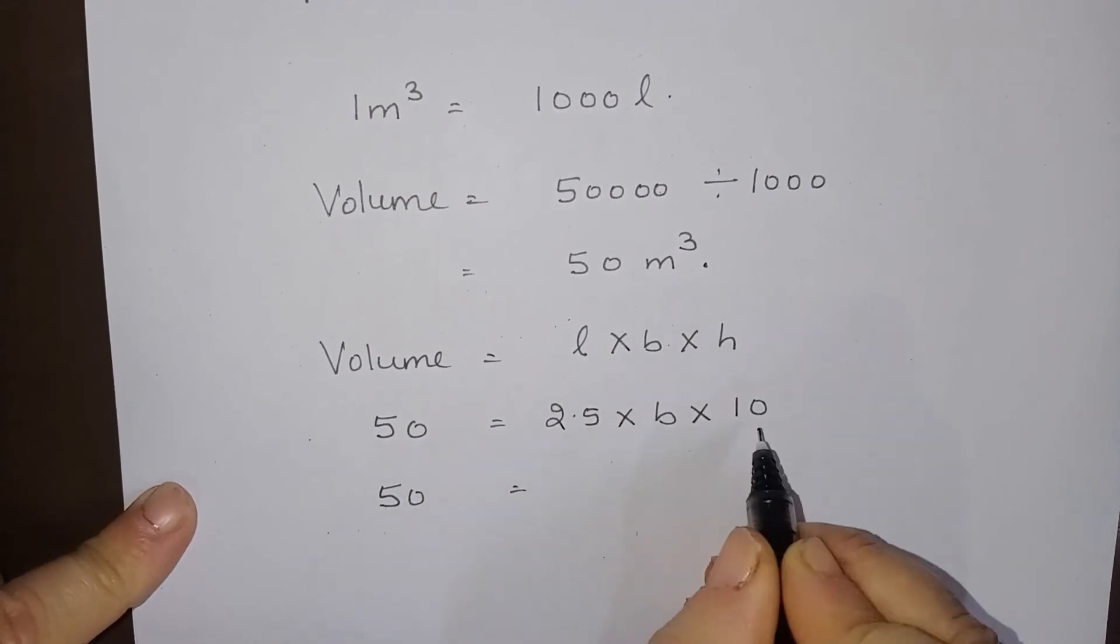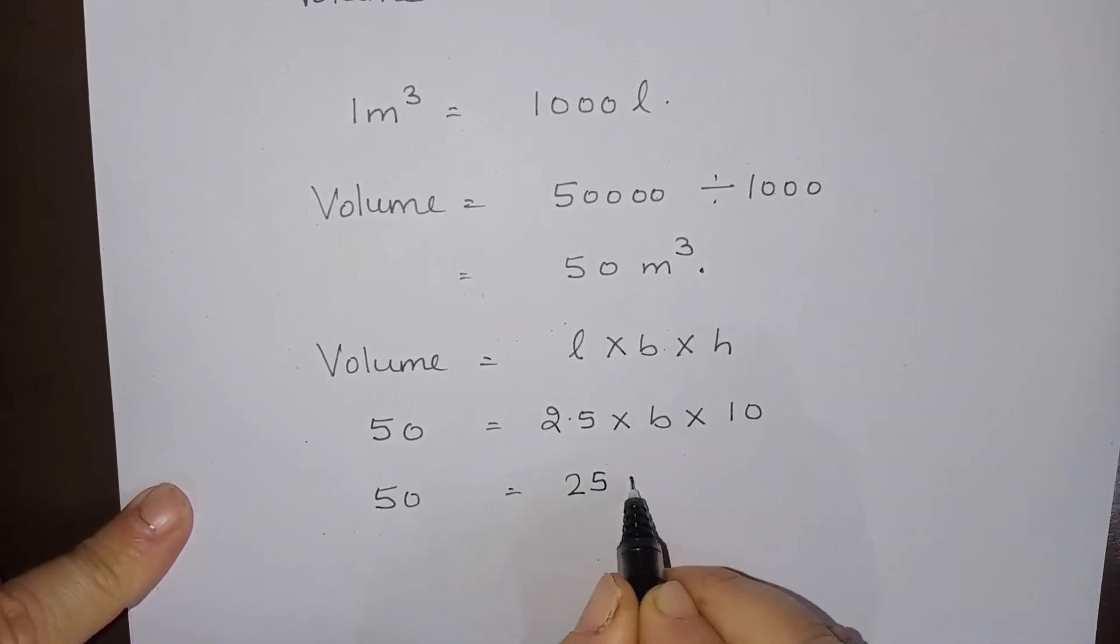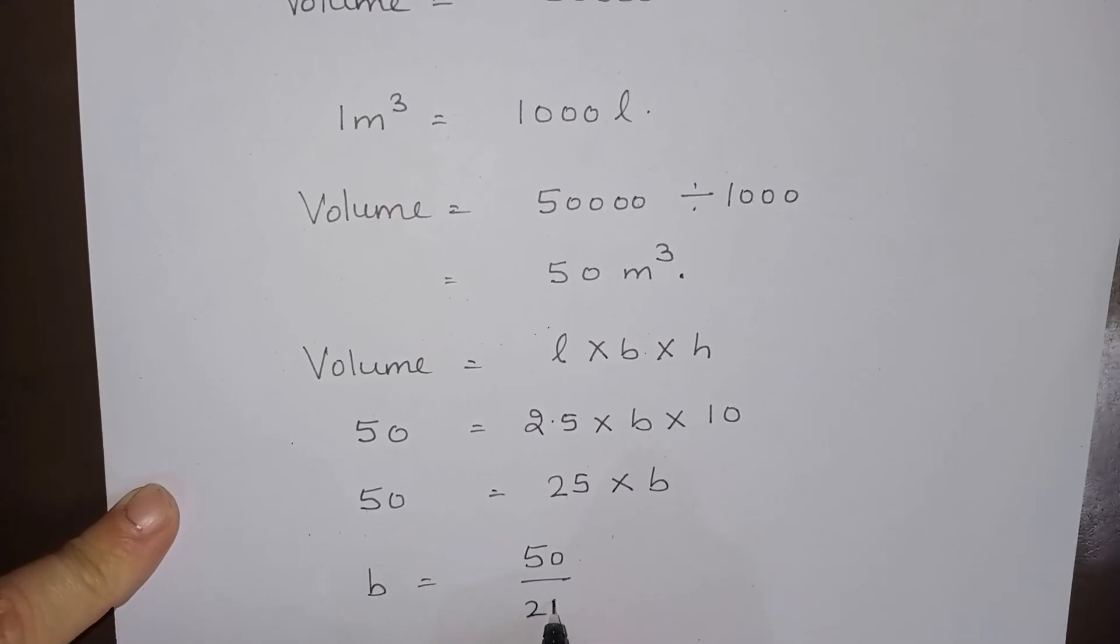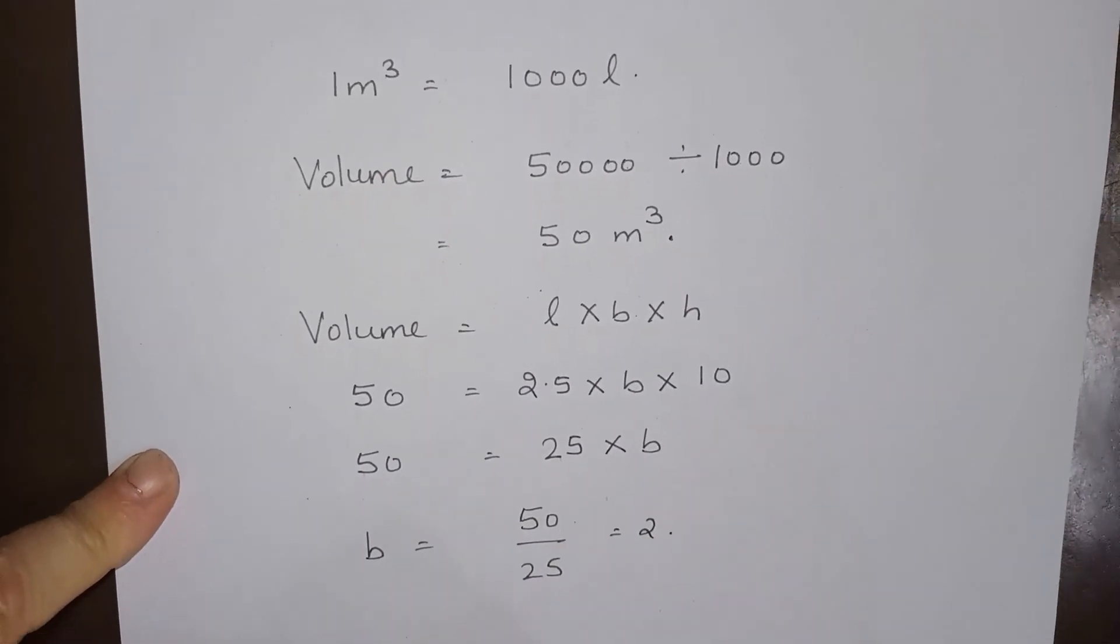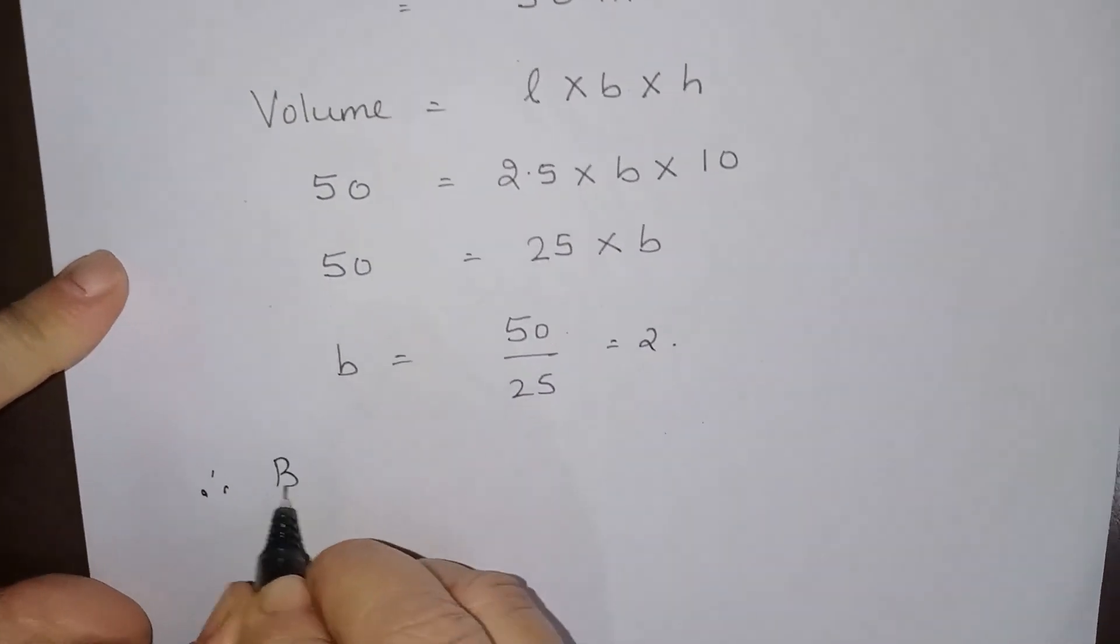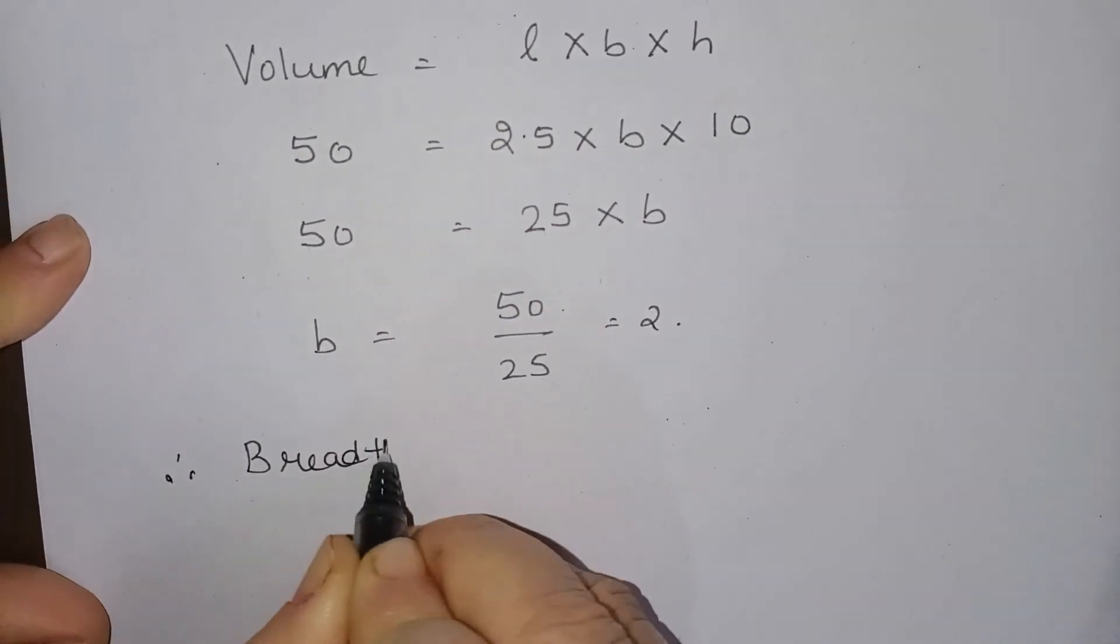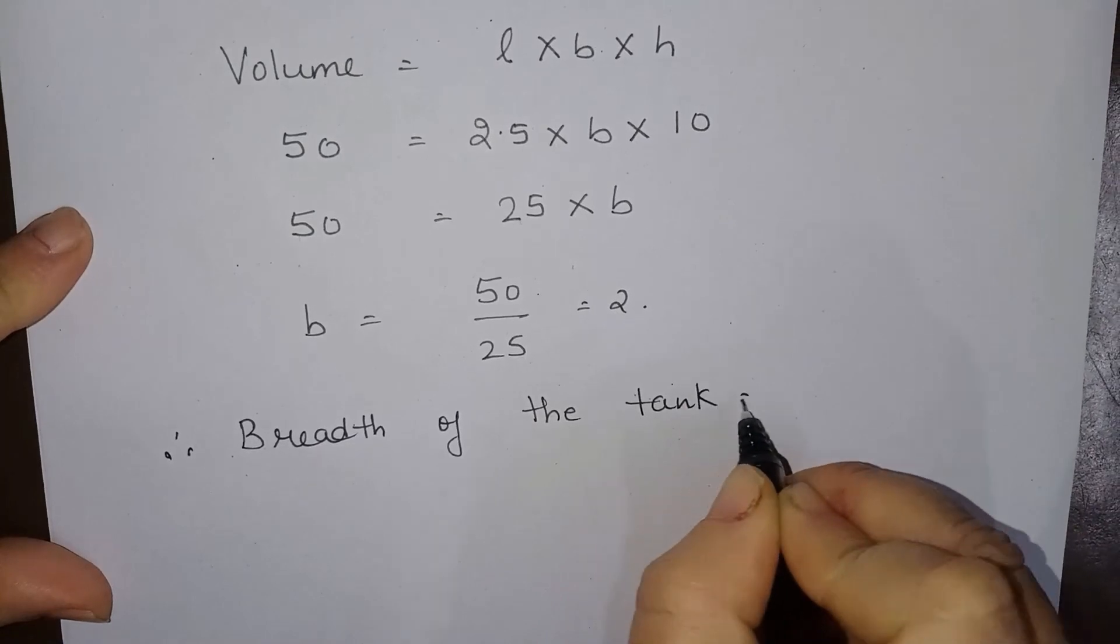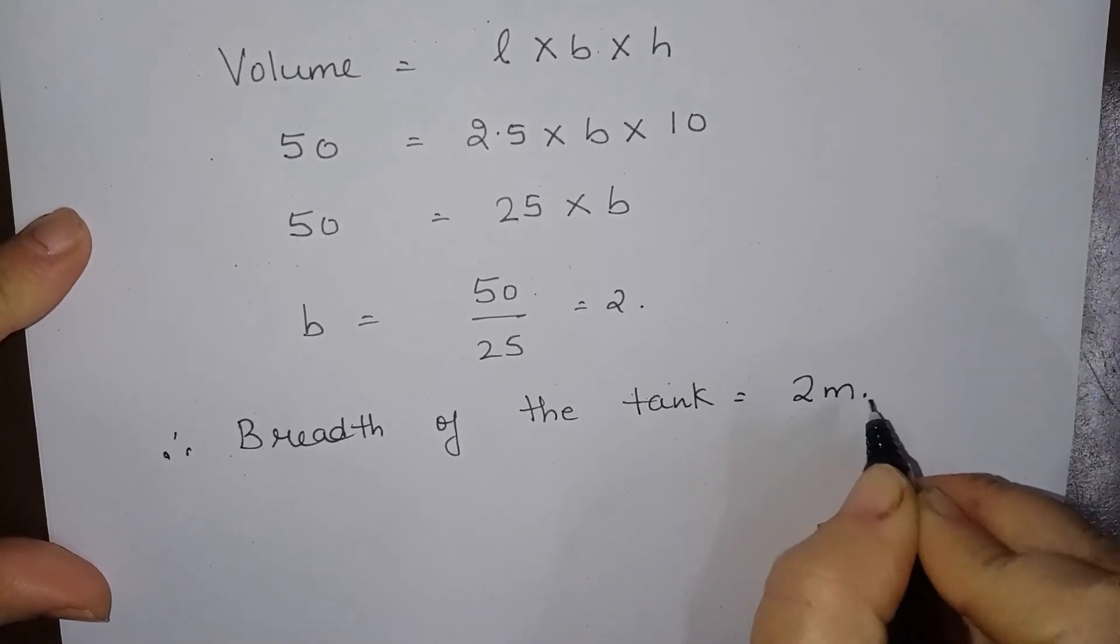So this is 50. 2.5 into 10 is 25 into breadth. So breadth is 50 over 25, which is 2. Therefore, we can write: breadth of the tank equals 2 metres.